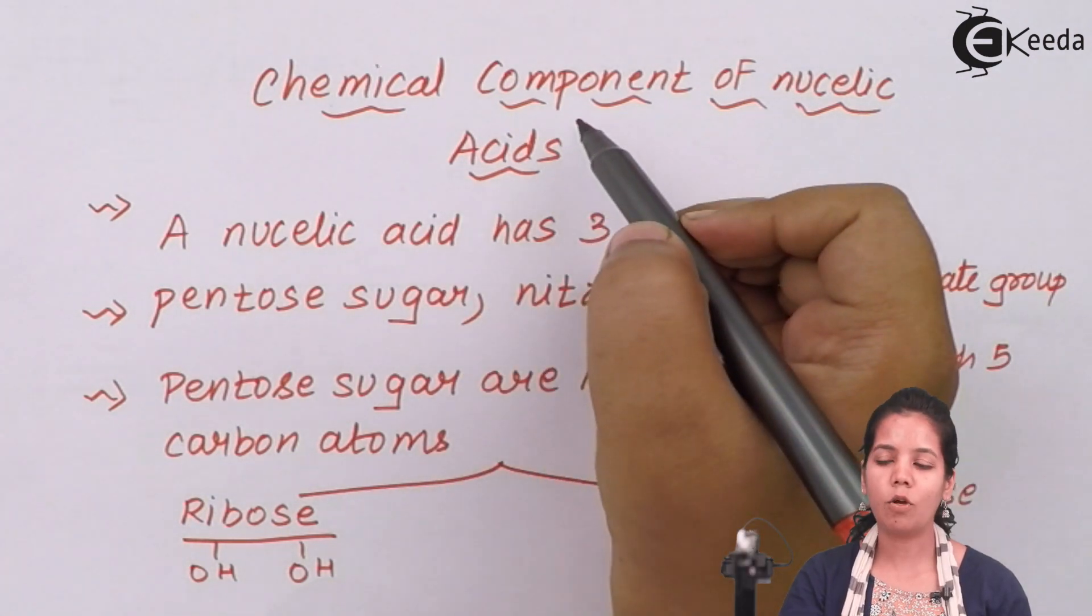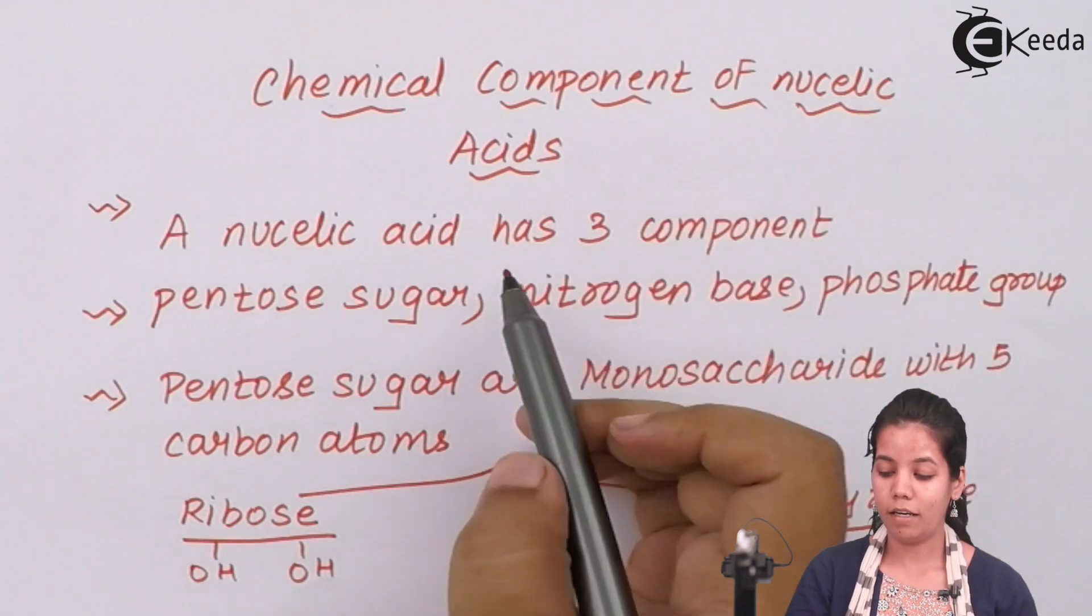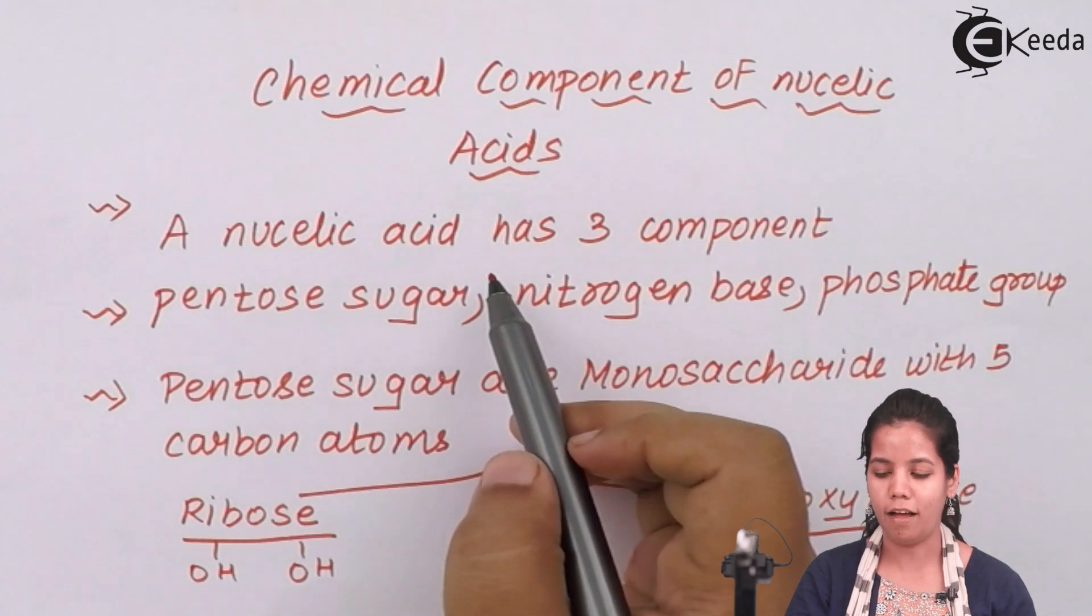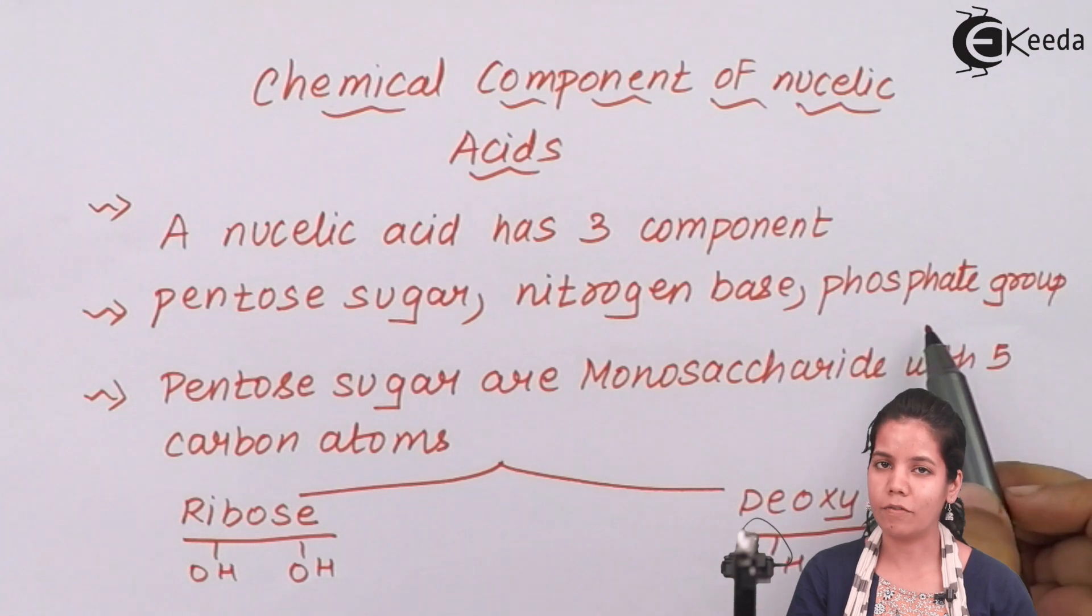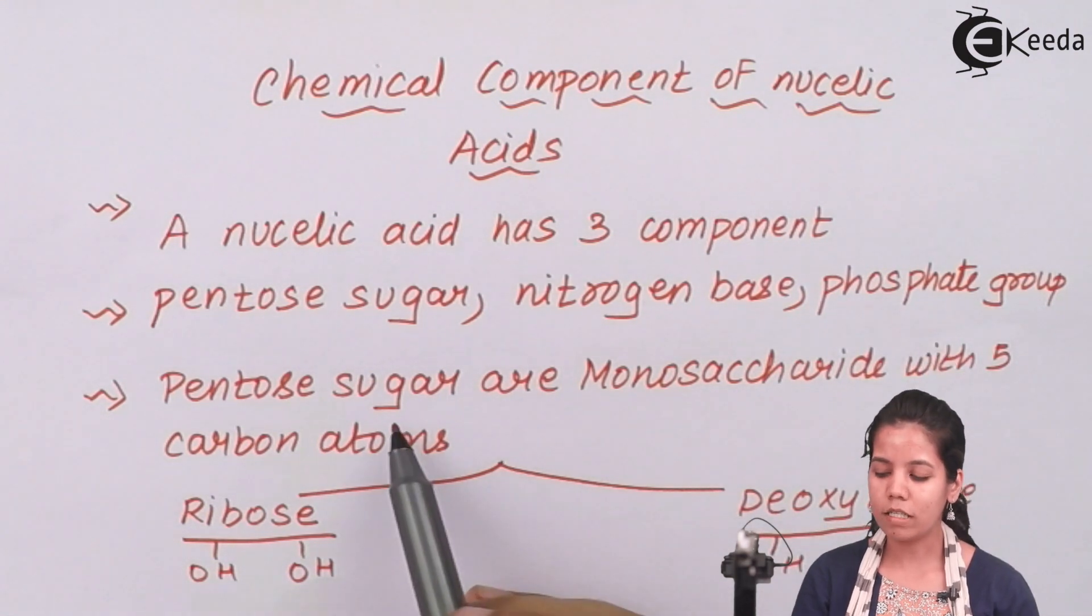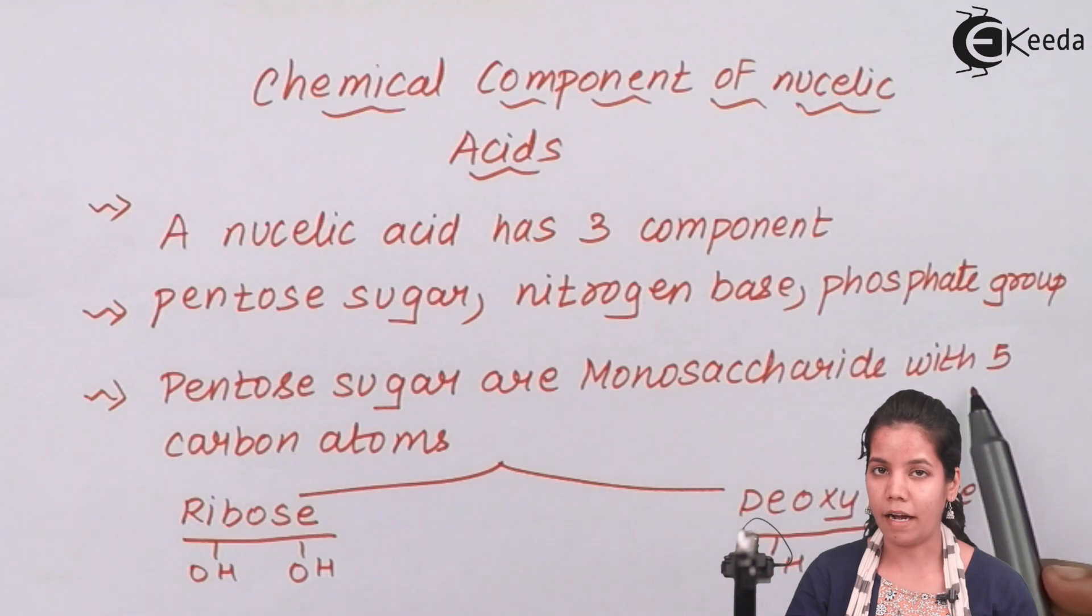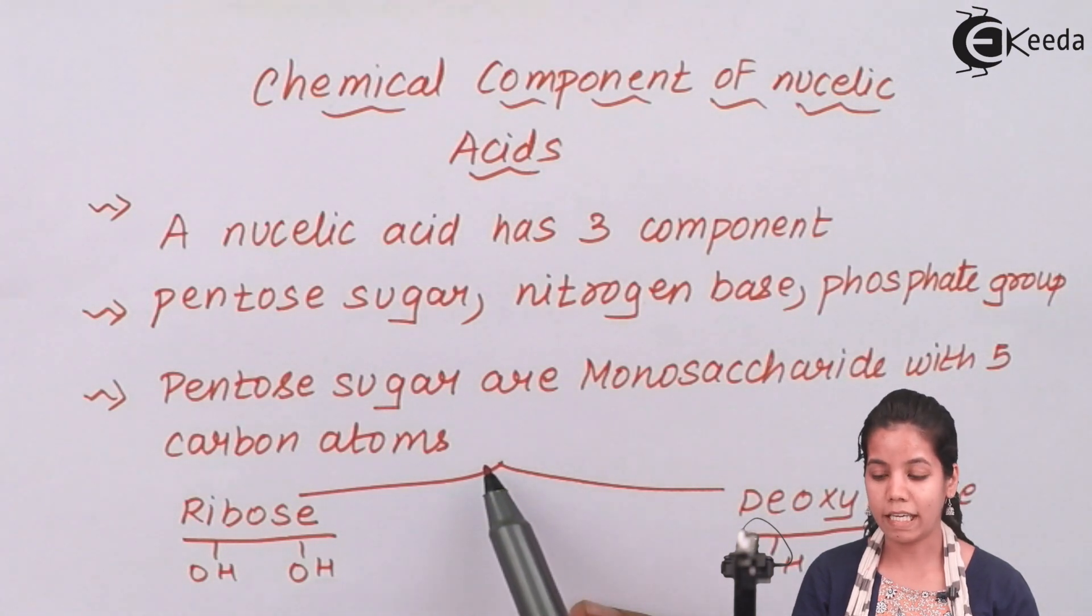Chemical components of nucleic acid, or you can say the molecules which are present on DNA. Now three types of nucleic acid or components that are present on DNA are your pentose sugar, your nitrogen bases and the phosphate group H3PO4 minus. Pentose sugars are nothing but monosaccharide, it means they are carbohydrate containing molecules with 5 carbon atoms or you can say they are pentamers of monosaccharides.